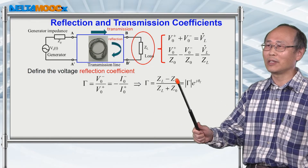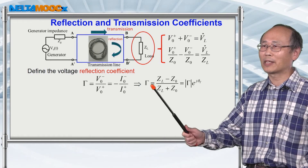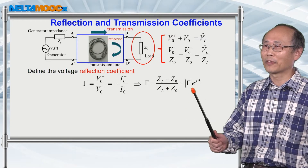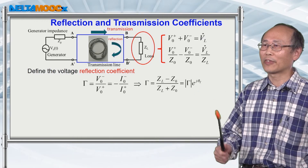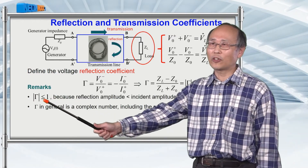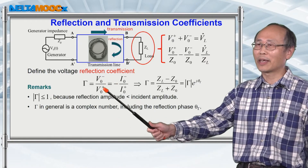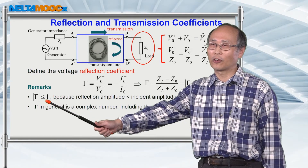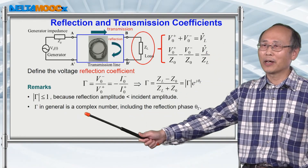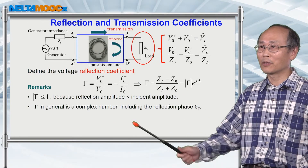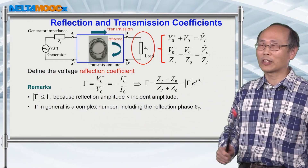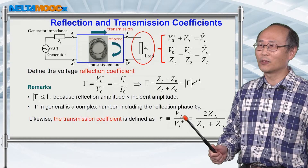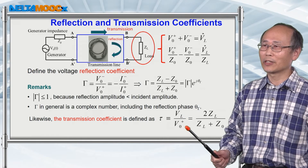In general, ZL and Z0 are complex numbers, so gamma is also a complex number. Expressed in polar form, it has a magnitude multiplied by a complex phase with phase angle theta-gamma. This reflection coefficient magnitude is always less than one, because you cannot get a reflection larger than the signal you send in the forward direction. You can also calculate the transmission coefficient, defined as the voltage sent into the load over the voltage sent in the forward direction, given by its corresponding expression.